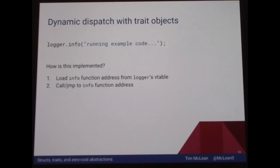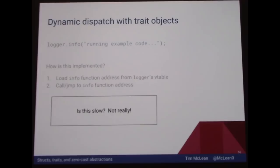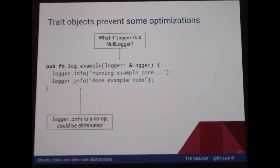How does a method call actually work when we call logger.info but don't know the type at compile time? It's really just two steps: look up the function address for the method implementation from the vtable, then call that function address — jump to it. It's not really that slow, especially with memory caches, and CPUs can predict jump addresses ahead of time. But there's a bigger issue: when you use a trait object, you're preventing the compiler from doing some optimizations. If the logger is a null logger — doing nothing — the compiler should be able to remove that call completely. But it can't, because it doesn't know the type will be a null logger.